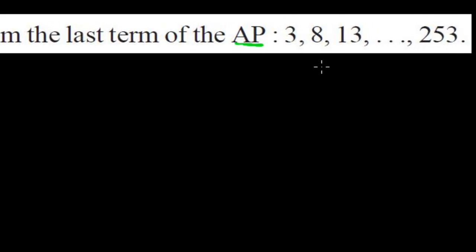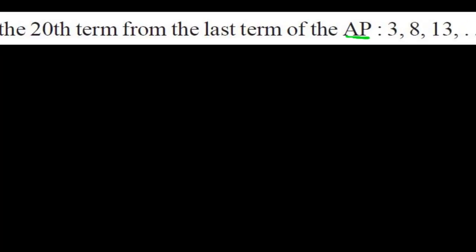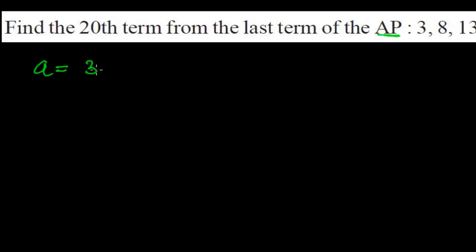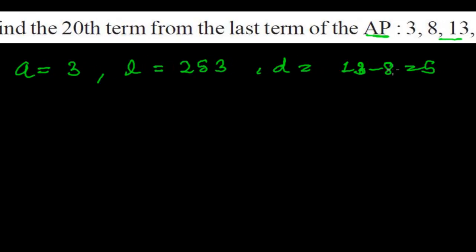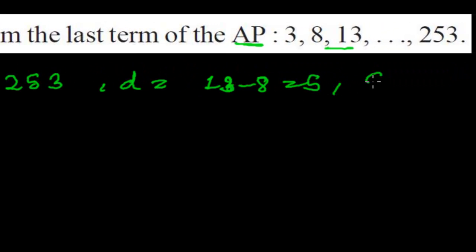In this arithmetic progression, 3 is the first term and 253 is the last term. The first term is 3 and the last term, also written as L, is 253. The common difference — we can easily subtract any two consecutive terms: 13 minus 8 equals 5.